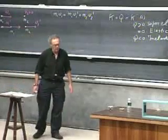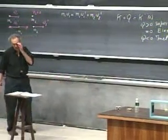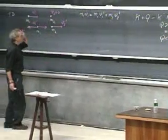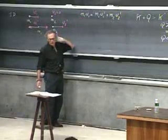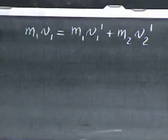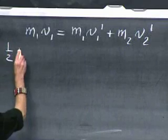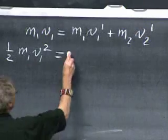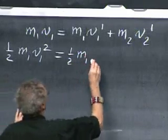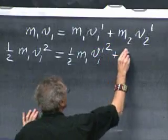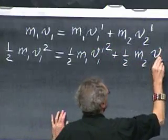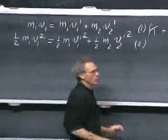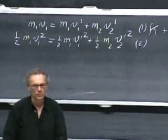For a completely elastic collision, Q is zero, momentum is conserved, and kinetic energy is also conserved. So I can write: one-half M1 V1 squared equals one-half M1 V1 prime squared plus one-half M2 V2 prime squared. This is equation one and equation two, and they can be solved. They are solved in your book; I will simply give you the results.